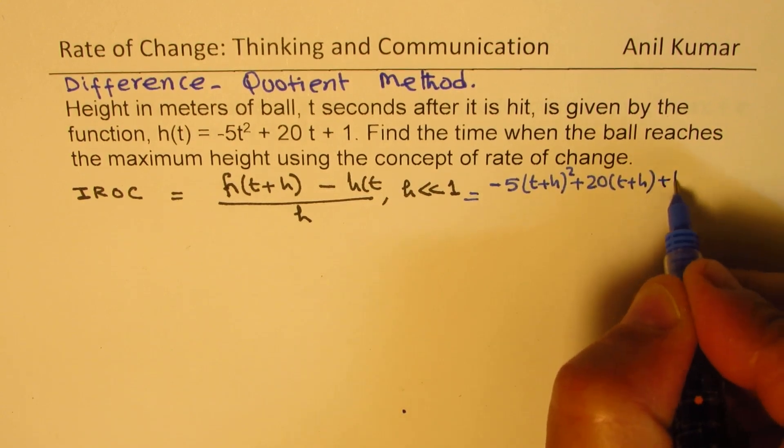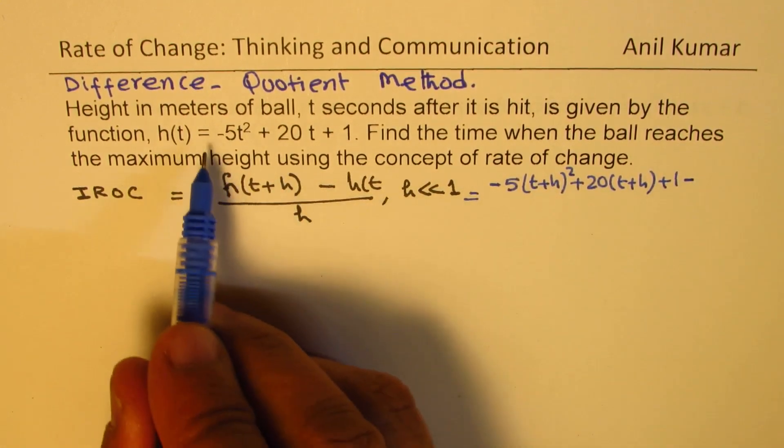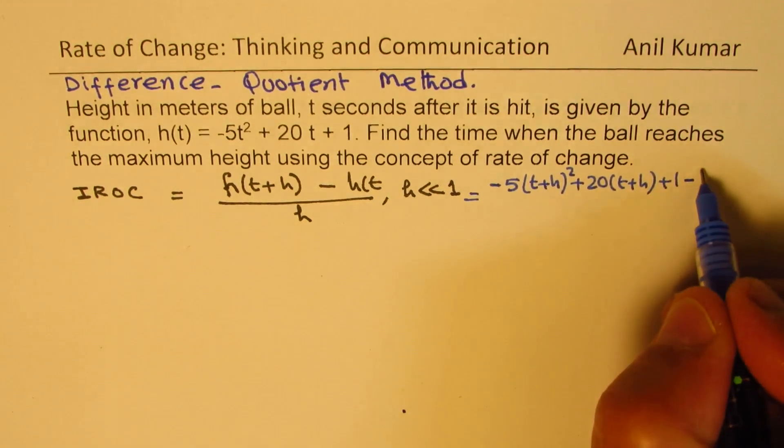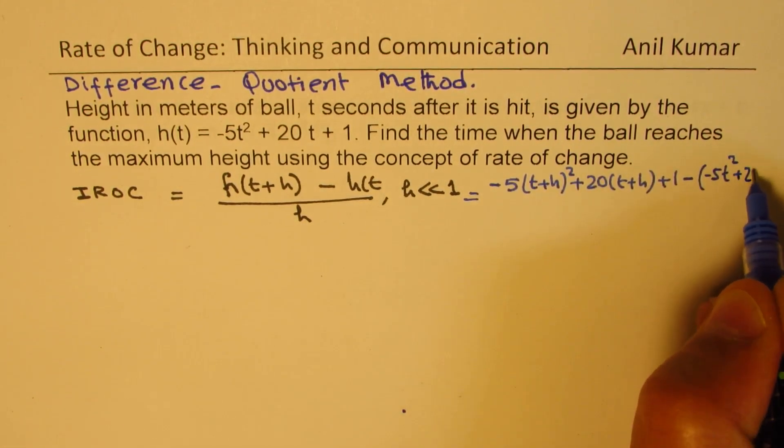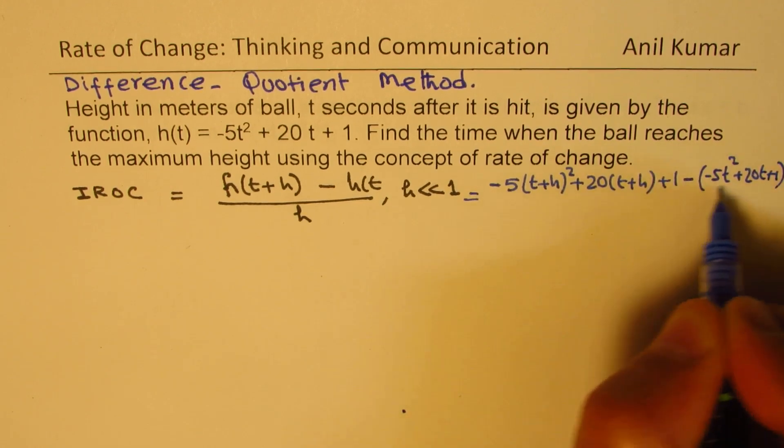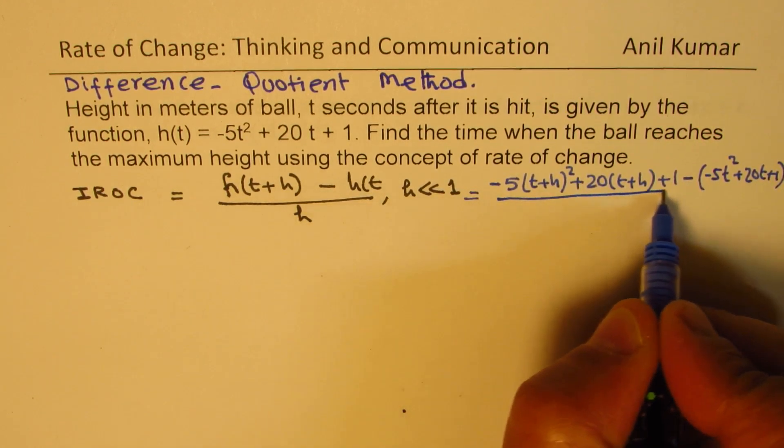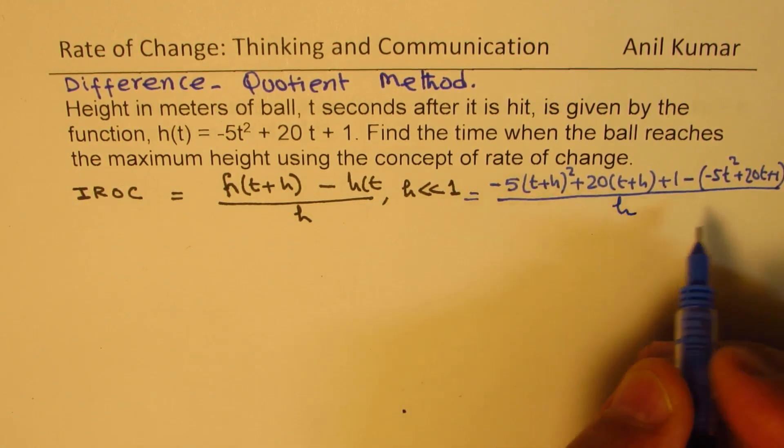plus 1 minus all this, right? Which is h(t), which is minus 5t² plus 20t plus 1. It is important to write the brackets, you know, absolutely clear thereafter.